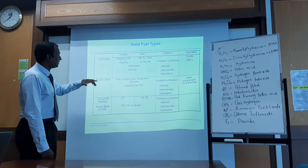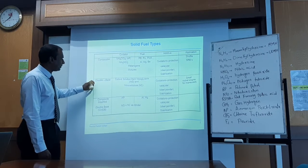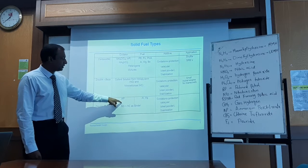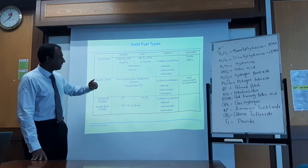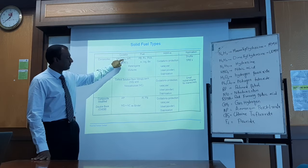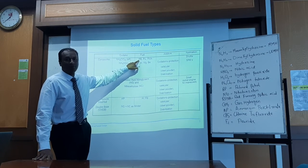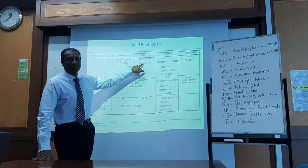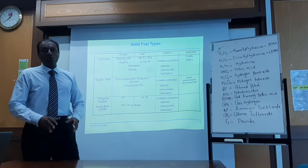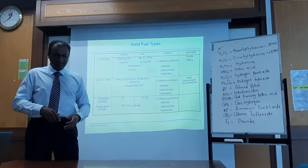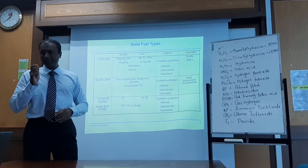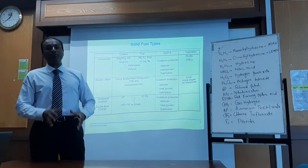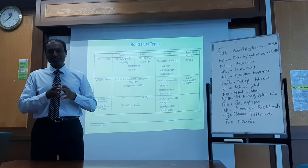Solid fuel types: composite, double base, and composite modified double base. The composite type uses ammonium as oxidizer and aluminum as fuel additive, paired with polybutadiene. Traces of aluminum and magnesium — and sometimes beryllium — are always present depending on the manufacturer. If you go to any launch site or plant and send samples to the lab, you will find traces of aluminum or magnesium from the outgassing. This is very, very toxic.